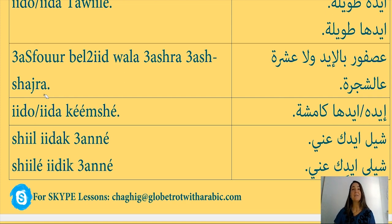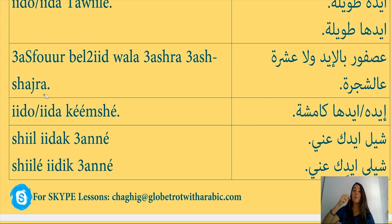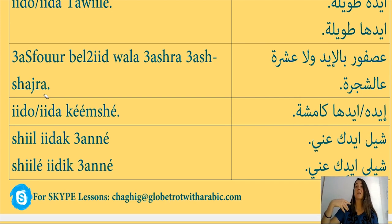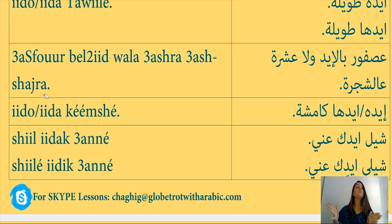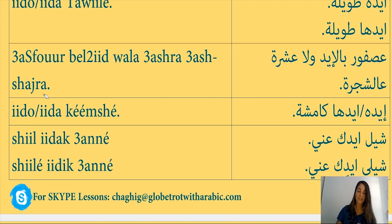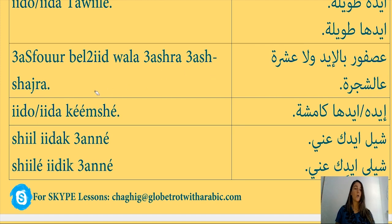We use this expression to choose a more guaranteed situation instead of taking risks. For example, if you can make one thousand dollars now for sure, but by waiting you might risk it and possibly get ten thousand later, you take the guaranteed option and say asfoor bil eid wa la ashra asshajra.